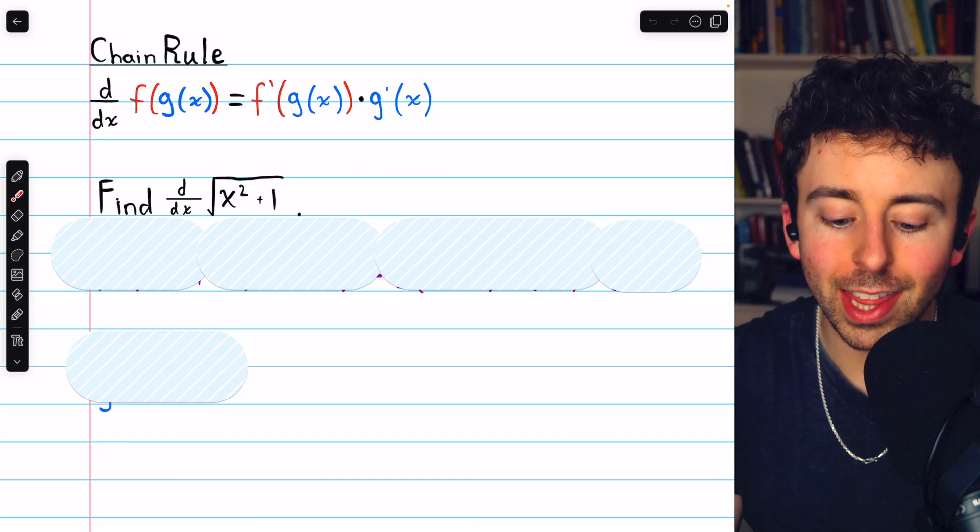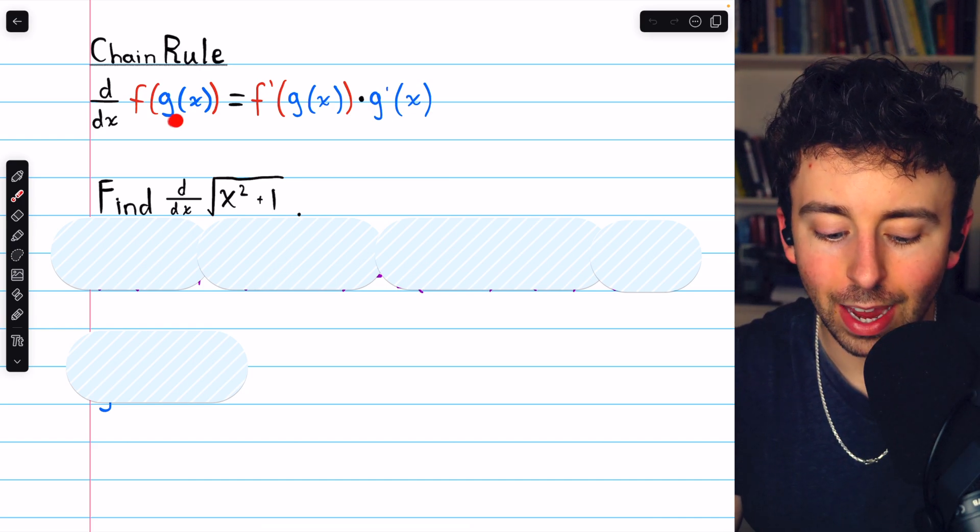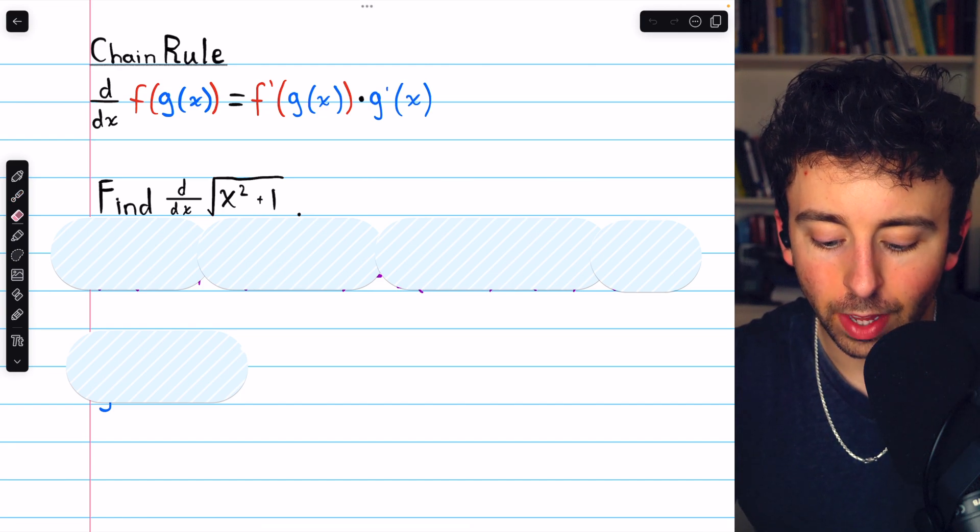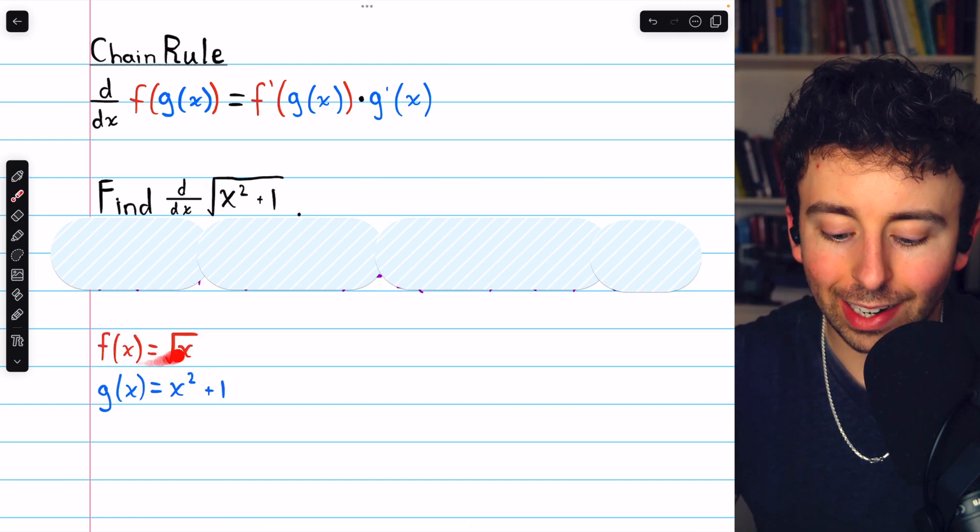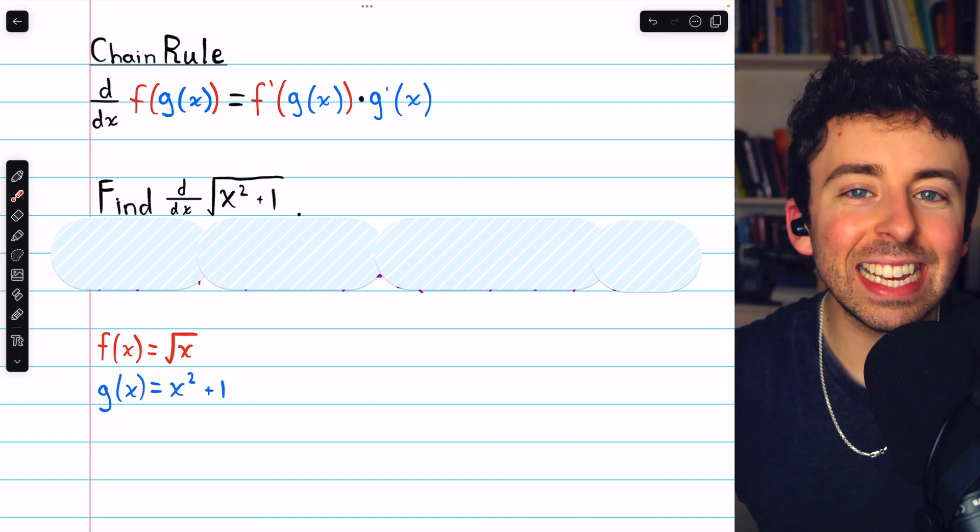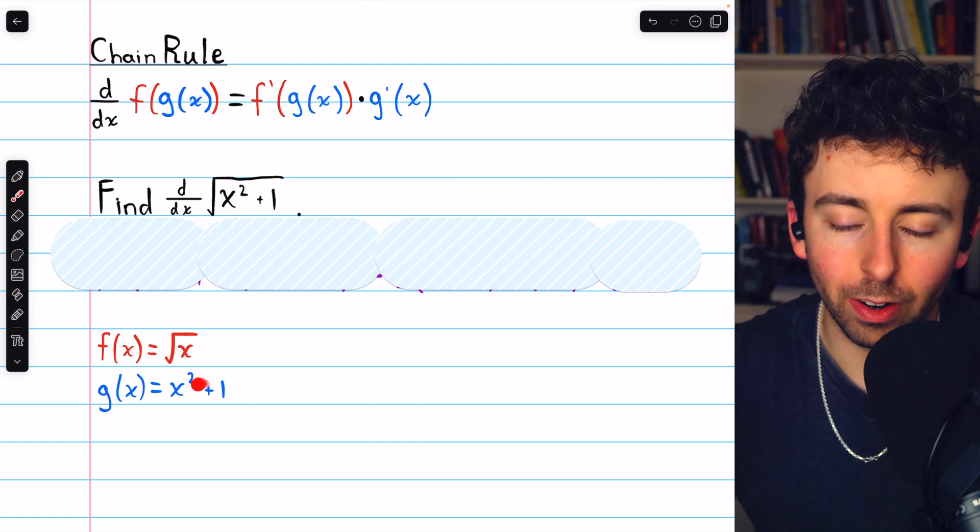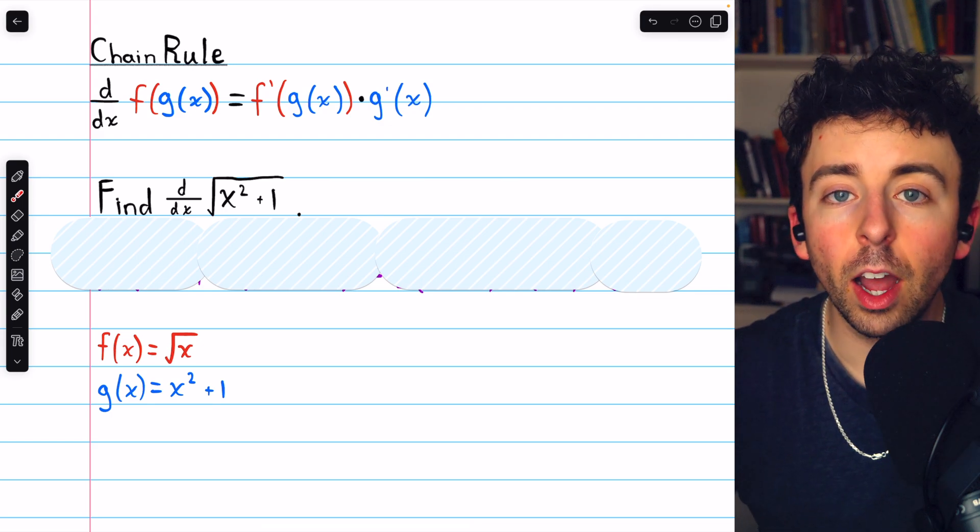So it's important to identify the f, the outside function, and the g, the inside function. In our example, the f is the square root—f of x is the square root of x. The inside function is that x squared plus 1, the part that's inside the square root.